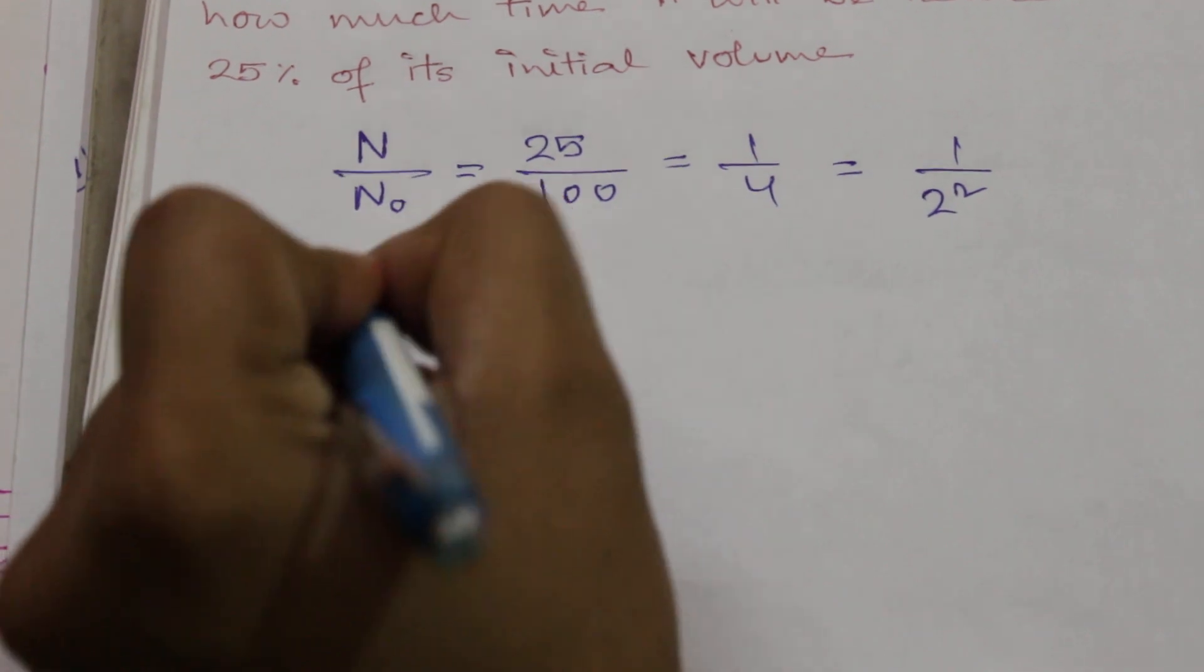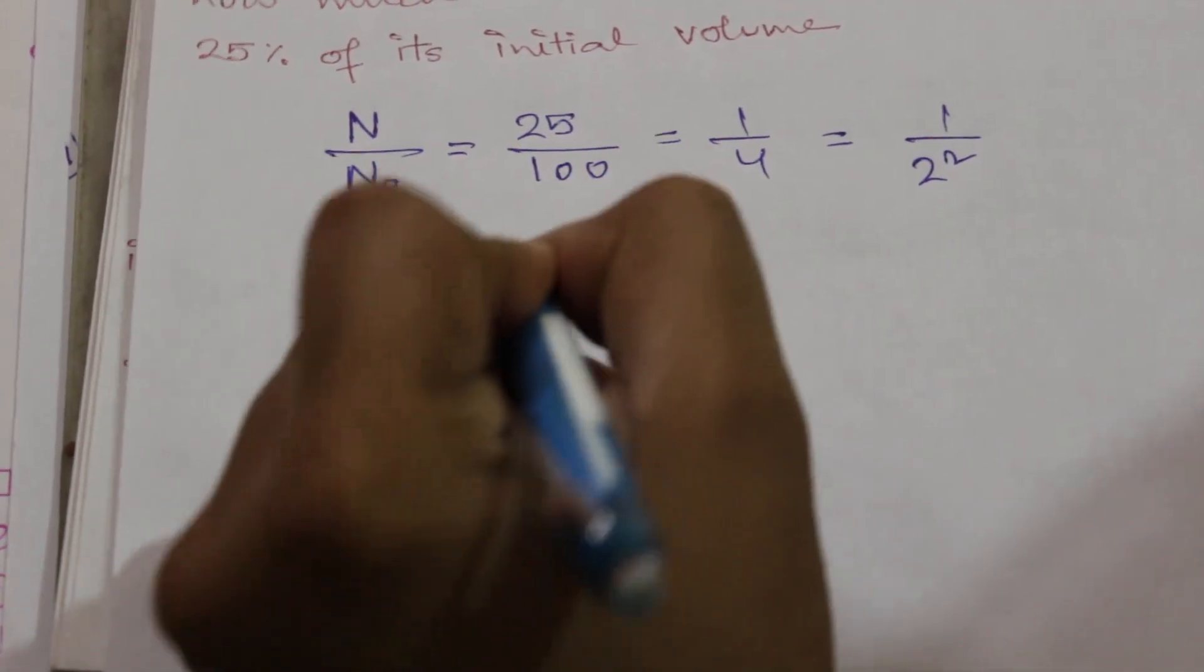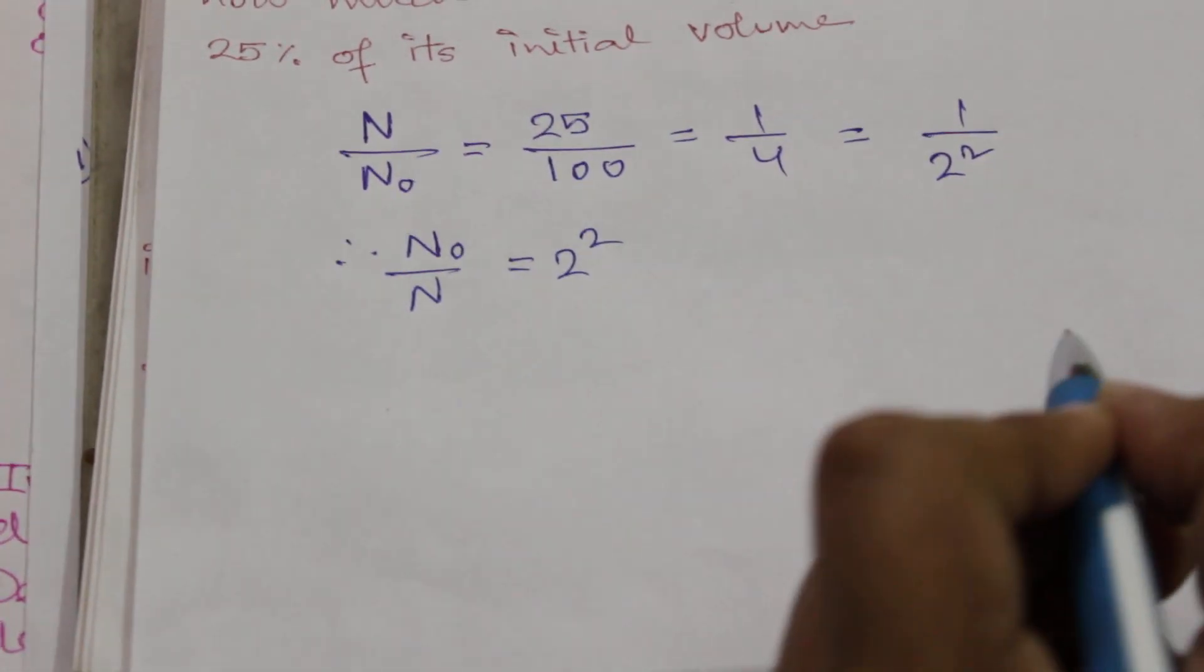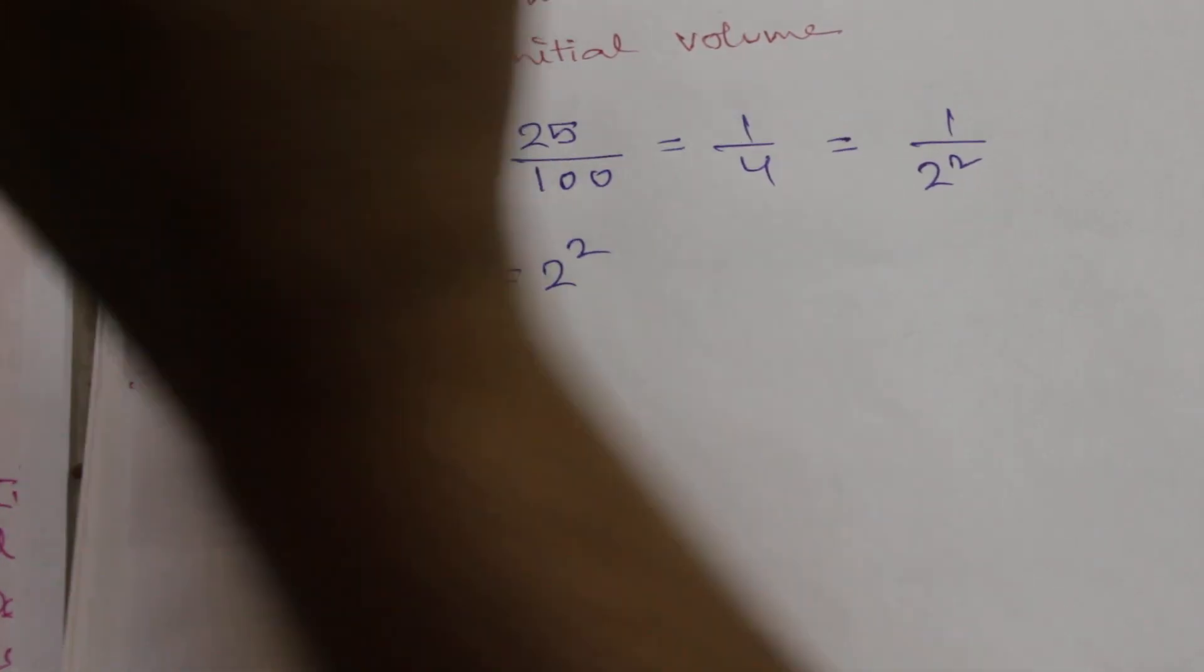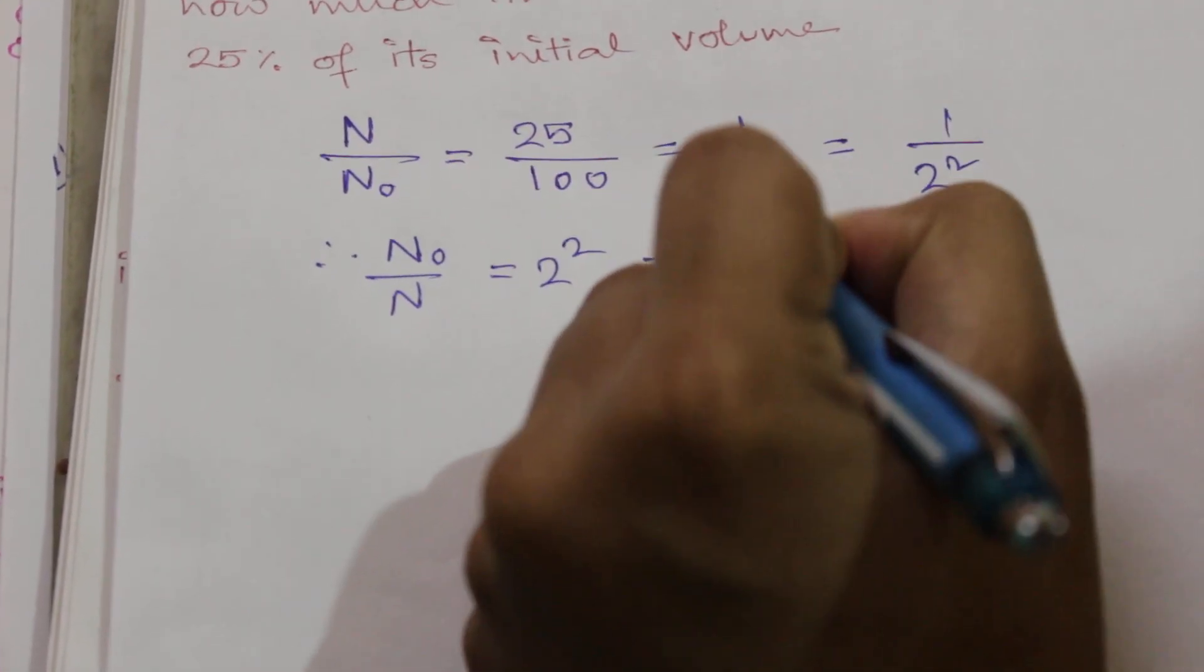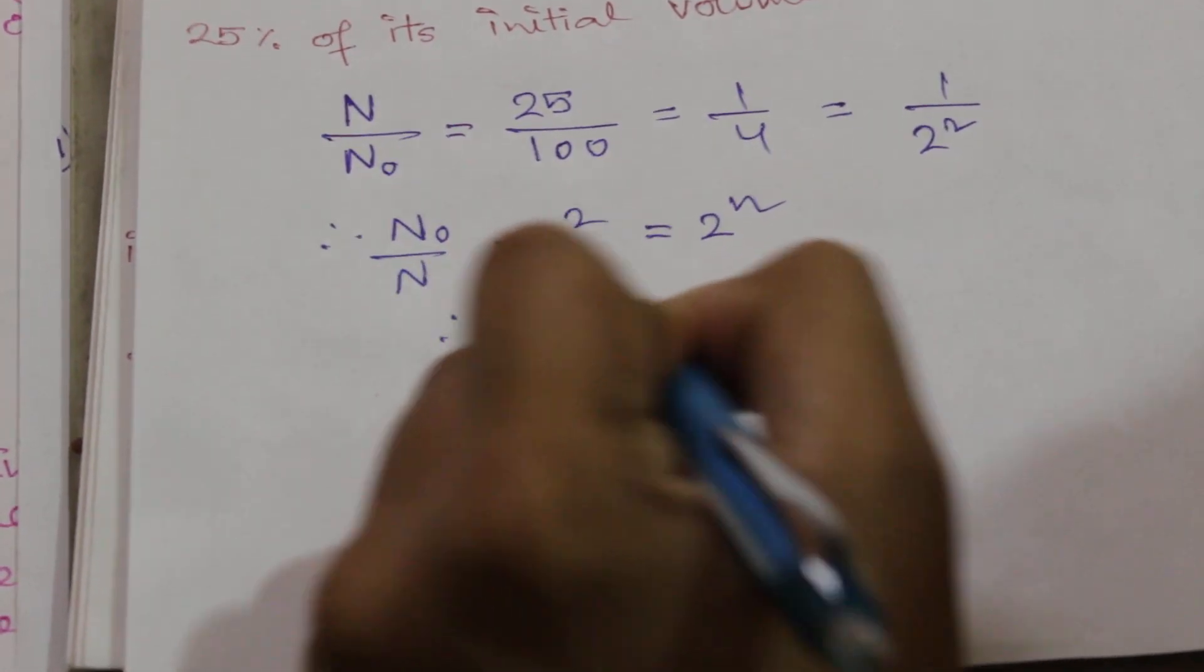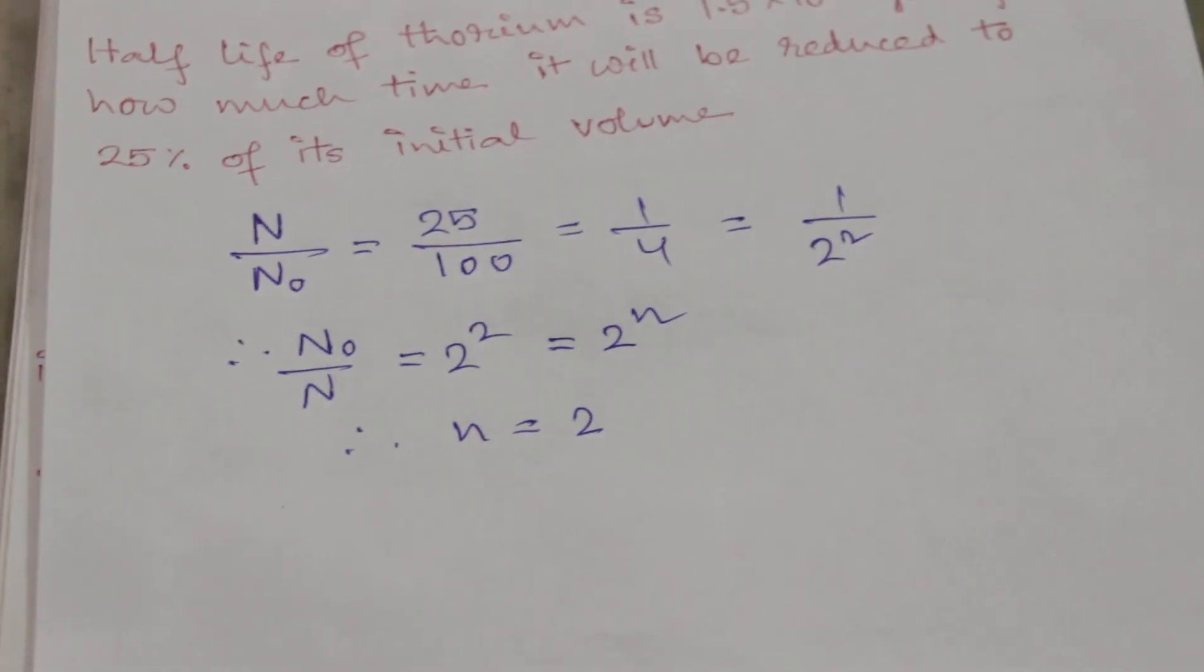So N₀ by N is 2 squared. Now according to this formula, N₀ by N is 2 to the power small n, so small n equals 2. So the number of half-lives is 2.